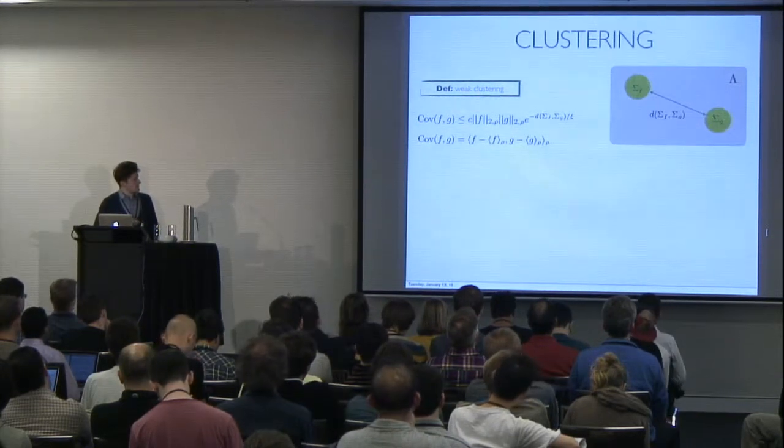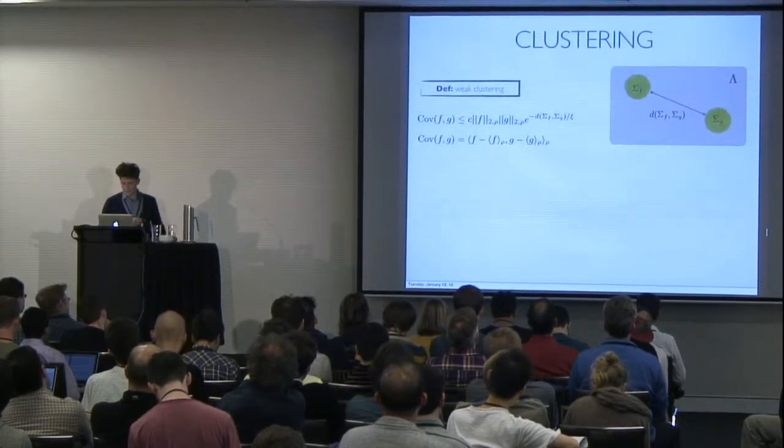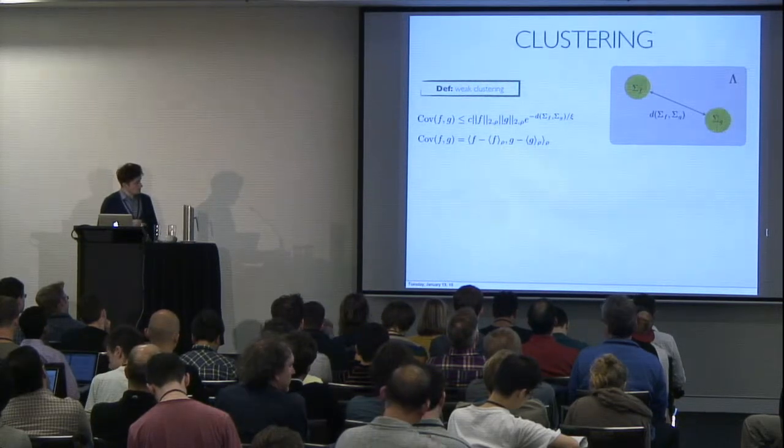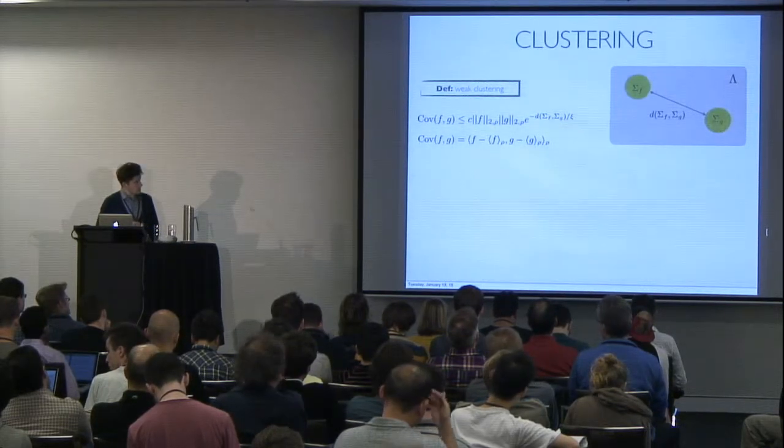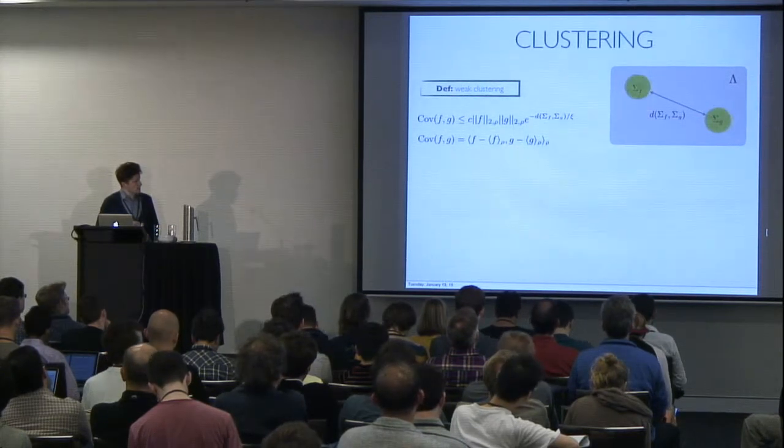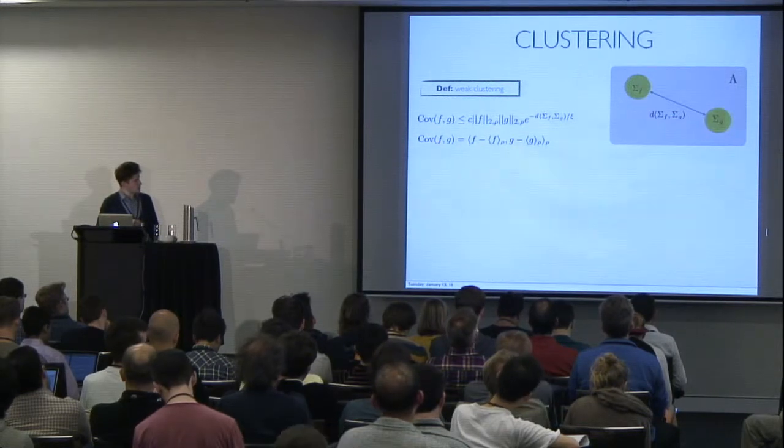So we say that a system satisfies weak clustering if an observable that has support on this bubble is very weakly correlated with an observable which has support on this bubble. And by very weakly correlated,